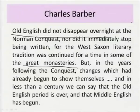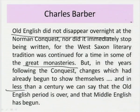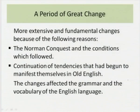These are some of the hazards of dividing historical time into different periods. Old English did not disappear overnight at the Norman Conquest, nor did it immediately stop being written. The West Saxon literary tradition was continued for a time in some of the great monasteries. But in the years following the conquest, changes which had already begun to show themselves, and in less than a century, the old English period was considered over and the Middle English period to have begun. Scholars call this a period of great change — more extensive and fundamental changes affected both the grammar and the vocabulary of the English language.